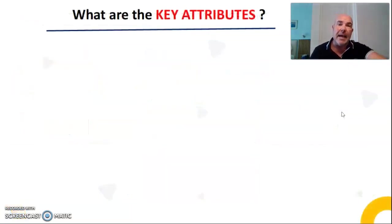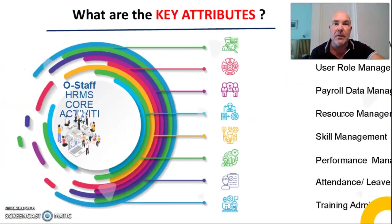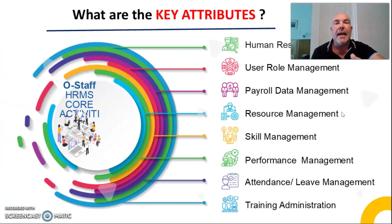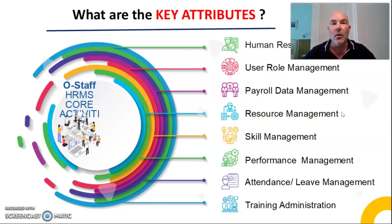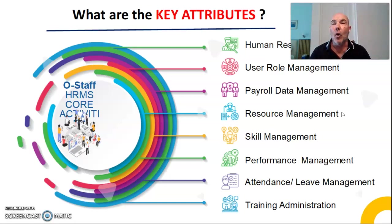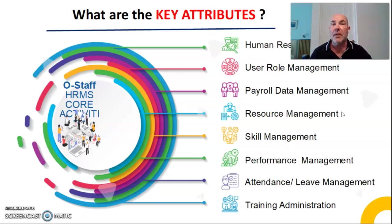So what exactly are the key attributes of the OStaff management system? Everything that you see here is included in the one price. It has a human resource management area, meaning you can bespoke every single part of it for anybody or everybody. It has a user role management system, which means you can break down each area for key workers to gain access to it — one person can access all of it, or individuals can access parts of it.